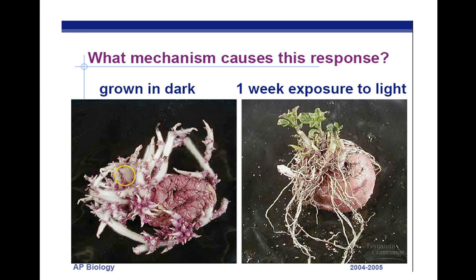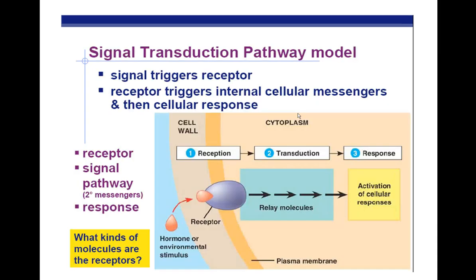Here we have a potato growing in the dark, and it gets really thick as far as the stem coming out. But after exposure to light, there's greening. How does that happen? This is called the signal transduction pathway — basically what happens here, and this is just background information.